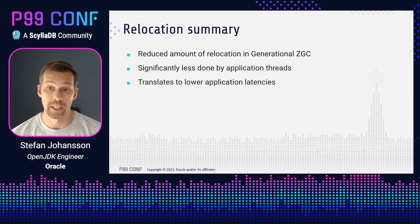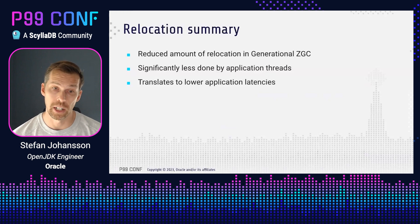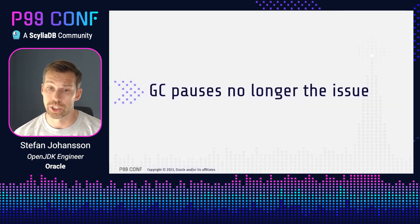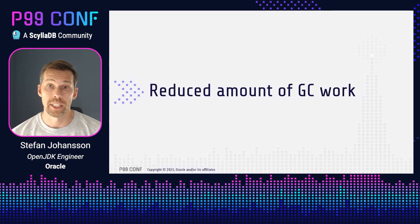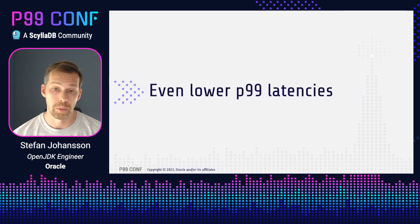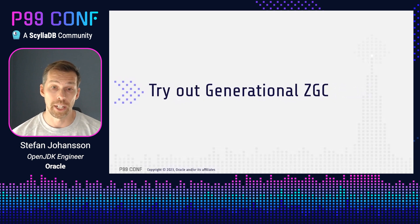Let's summarize: we've been able to reduce the amount of relocation in generational ZGC by having a better algorithm making use of the generational hypothesis. This leads to significantly less relocation work that has to be done by the Java application threads, which in turn translates into lower application latencies. What conclusions can we take away? GC pauses are no longer the issue if you're using ZGC — the pauses are extremely short. There are other things that cause application latencies, but with generational ZGC we're able to reduce the amount of work that has to be done by the Java application threads, leading to even lower P99 latencies.